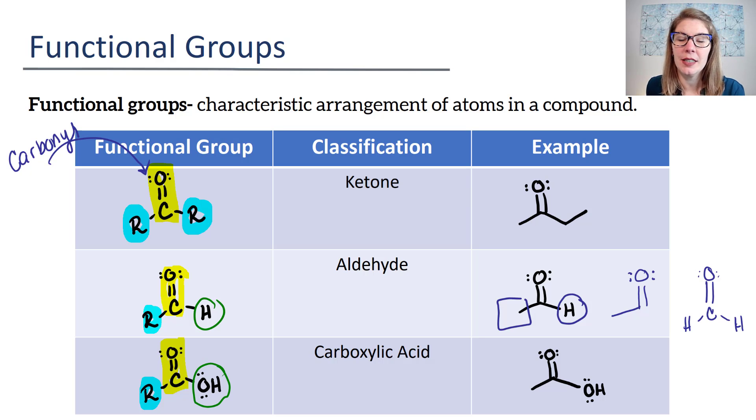Having that OH there makes this your carboxylic acid. On our example column, I have an OH and your C double bond O. And then over here where my arrow is pointing is a CH3. This is acetic acid, which is what gives vinegar that sourness to it. Vinegar is just 5% acetic acid in water.